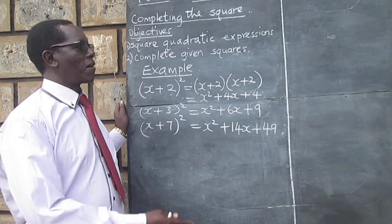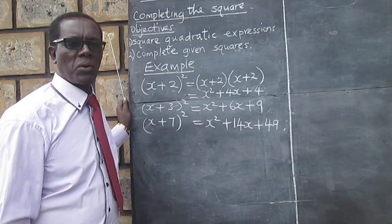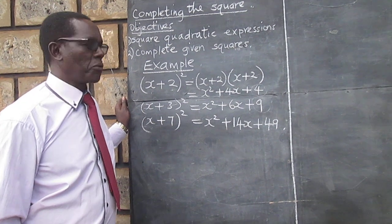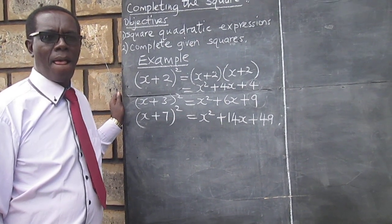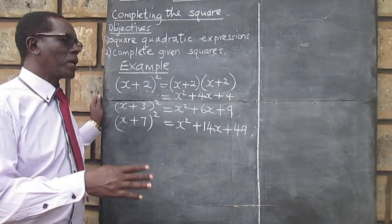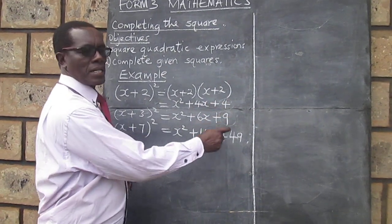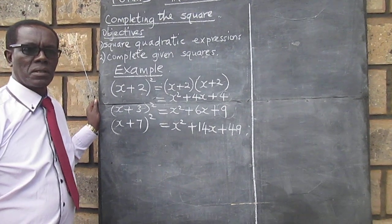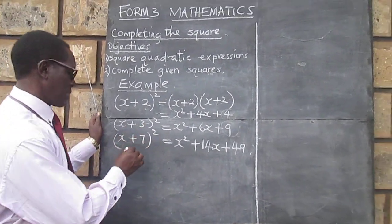So, we are done with our first objective, we wanted to see how we can square, and we want to use the same expressions. But this time, we will assume we do not have the last part. So, we now go to the completing the square.